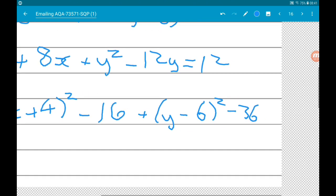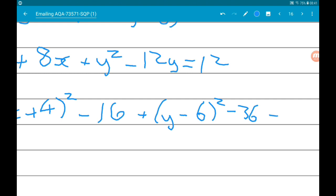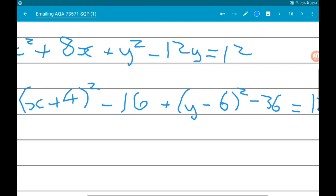And then that is equal to 12. So we've got x plus 4 squared add y minus 6 squared minus 16 minus 36 is minus 52.